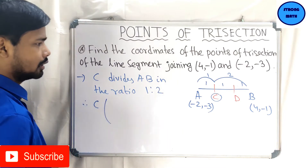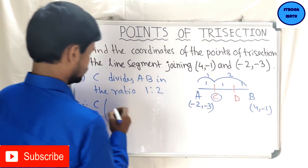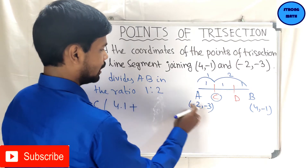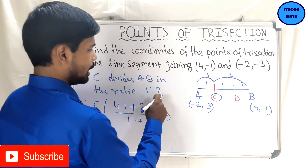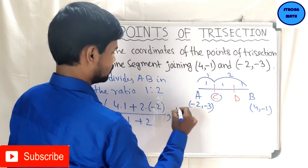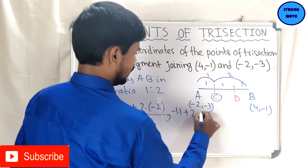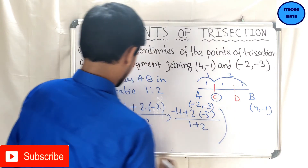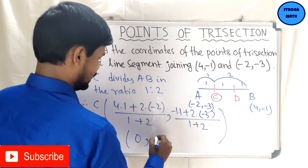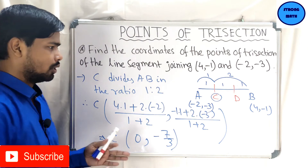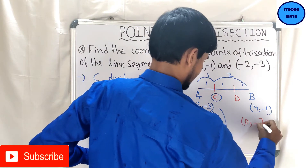Using the section formula, coordinates of C are (m·x₂ + n·x₁)/(m+n) and (m·y₂ + n·y₁)/(m+n). So x-coordinate: (1×4 + 2×(−2))/(1+2) = (4−4)/3 = 0. And y-coordinate: (1×(−1) + 2×(−3))/3 = (−1−6)/3 = −7/3. Therefore, coordinates of C are (0, −7/3).